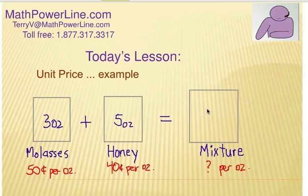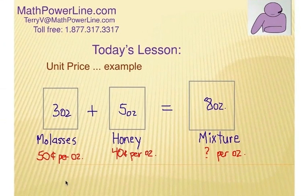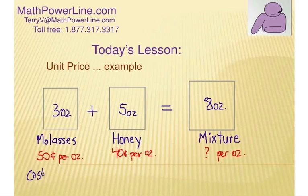Well, first of all, let's look at the total here and that would be eight ounces. So we want to make sure we have a total amount there. But now let's look at the cost. So the cost of the molasses would be 50 cents per ounce. So 50 times three is 150 pennies. Let's call that $1.50. So it costs $1.50 for that amount of molasses.